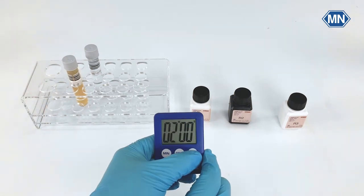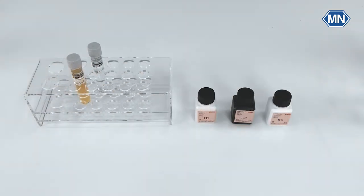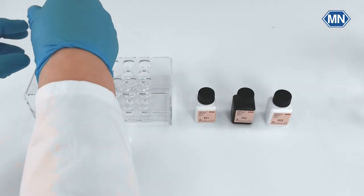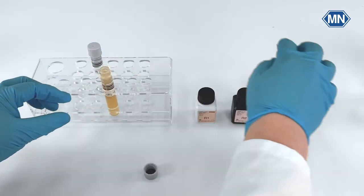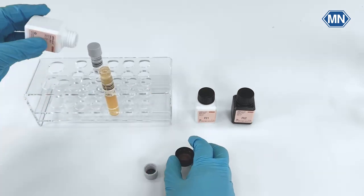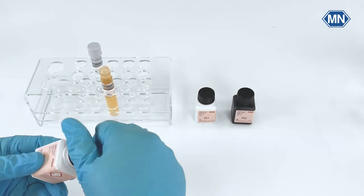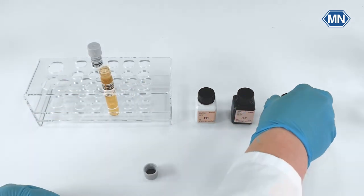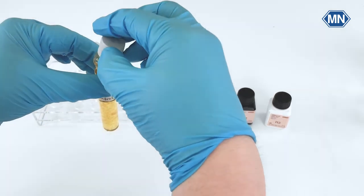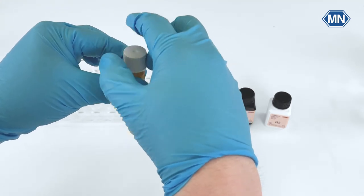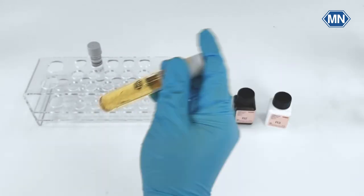Now wait two minutes. After exactly two minutes open the test tube again and add five drops of R3. Flakes will form now. Close without letting any air bubbles in. Shake the tube until all flakes are dissolved.